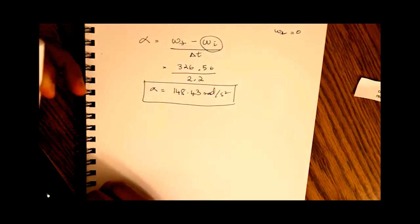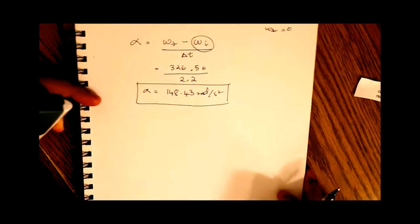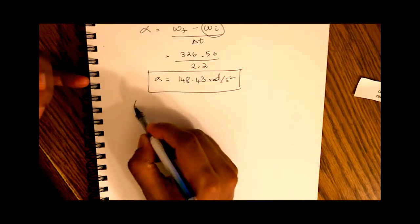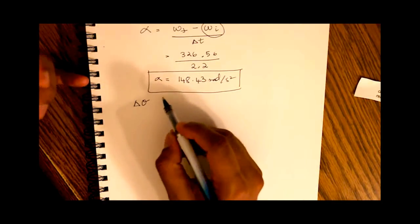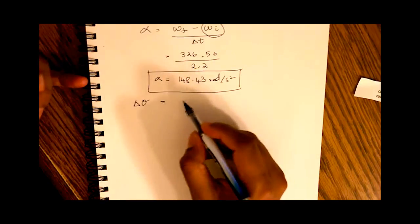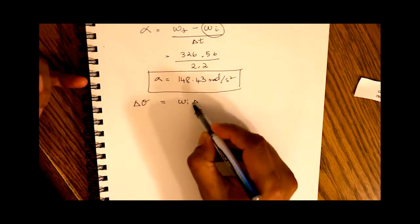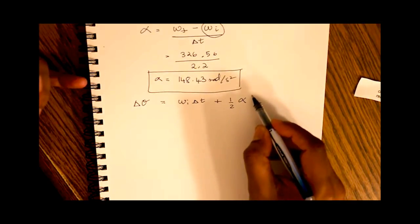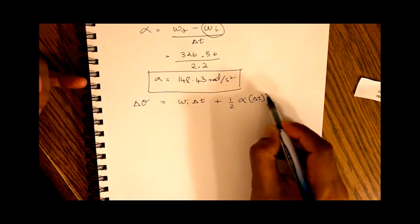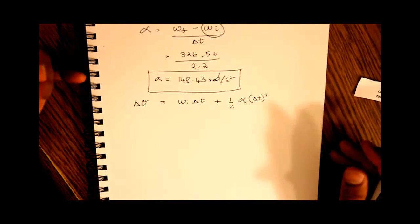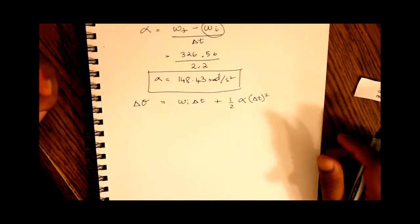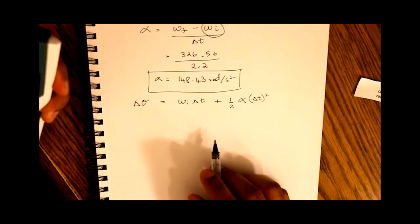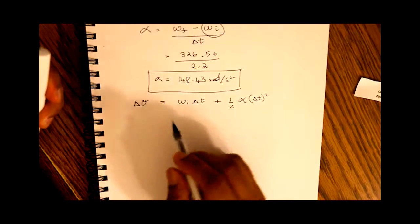Next part of the question, how many revolutions does it make while reaching 3120? So we know our change in theta equals our initial angular velocity times change in time plus half the angular acceleration times change in time squared. Our position formula for change in delta.